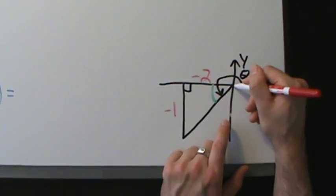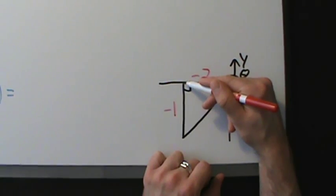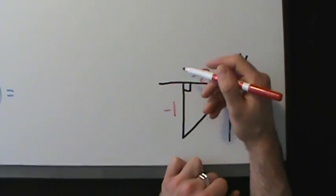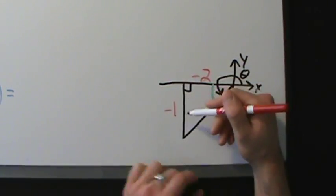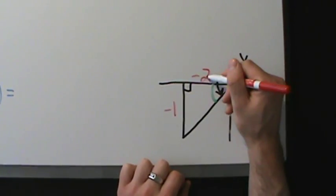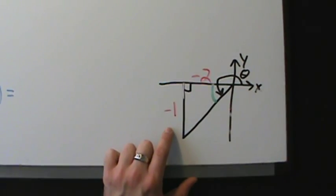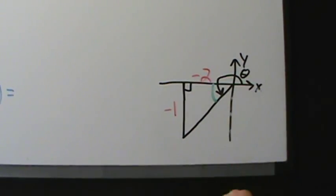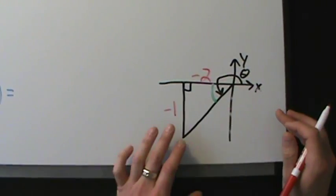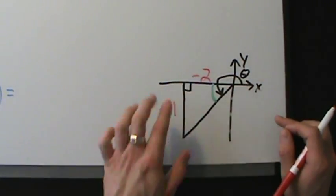If you'd rather keep everything positive, that's fine, but then you'll have to remember at the end that sine and cosine both have to be negative because you're in the third quadrant. It's pretty easy to forget that. So that's why I like putting the negative signs in now, so we don't have to think about it or worry about it later.